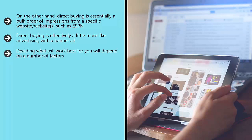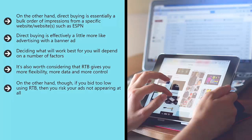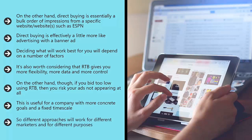Deciding what will work best for you will depend on a number of factors. For instance, your budget is going to come into play, as direct buying tends to be more expensive because lower CPIs won't have as many opportunities to appear. It's also worth considering that RTB gives you more flexibility, more data, and more control — you can identify which sites are working best for you, at which times, and for which viewers, and then further tailor your approach. On the other hand, if you bid too low using RTB, you risk your ads not appearing at all, in direct contrast to direct buys, which essentially guarantee your ad spot and a certain number of impressions. This is useful for a company with more concrete goals and a fixed timescale. With direct buying, you will be able to more tightly control where your advertising appears and forge a closer relationship between your brand and that of the publisher. So different approaches will work for different marketers and for different purposes.